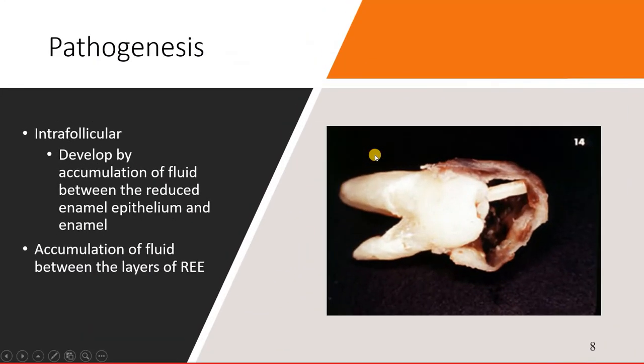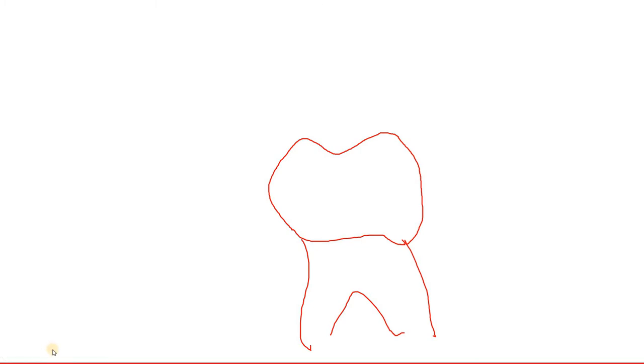Let's have a look at the pathogenesis. Before we go into the typical pathogenesis, let us understand how a particular tooth develops. In a molar, after the formation of the tooth by the epithelial apparatus, you have the reduced enamel epithelium that nicely coats around the cemento-enamel junction. This is not a single cell layer but a double cell layer — you have the inner enamel epithelium and the outer enamel epithelium coating this region.